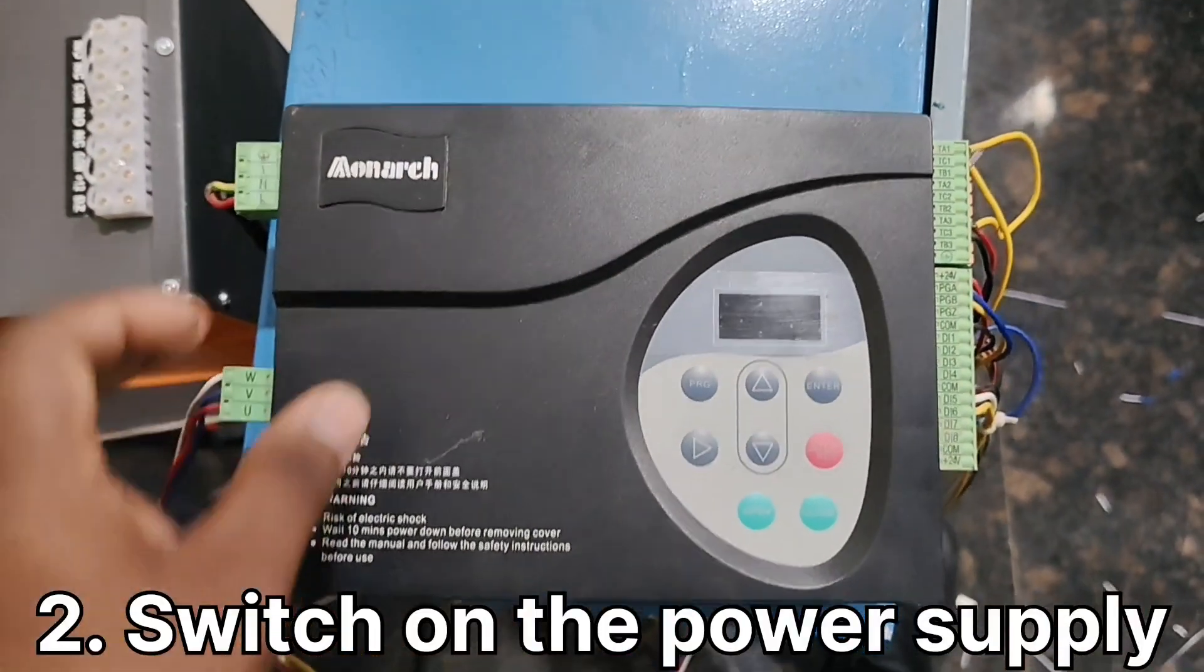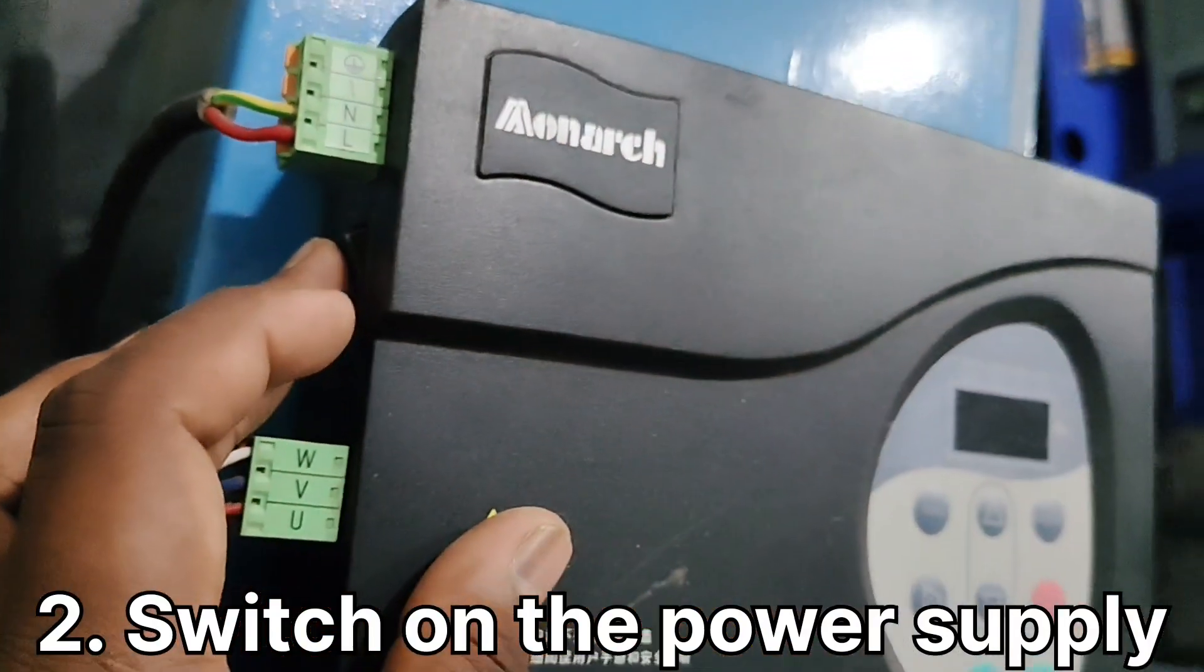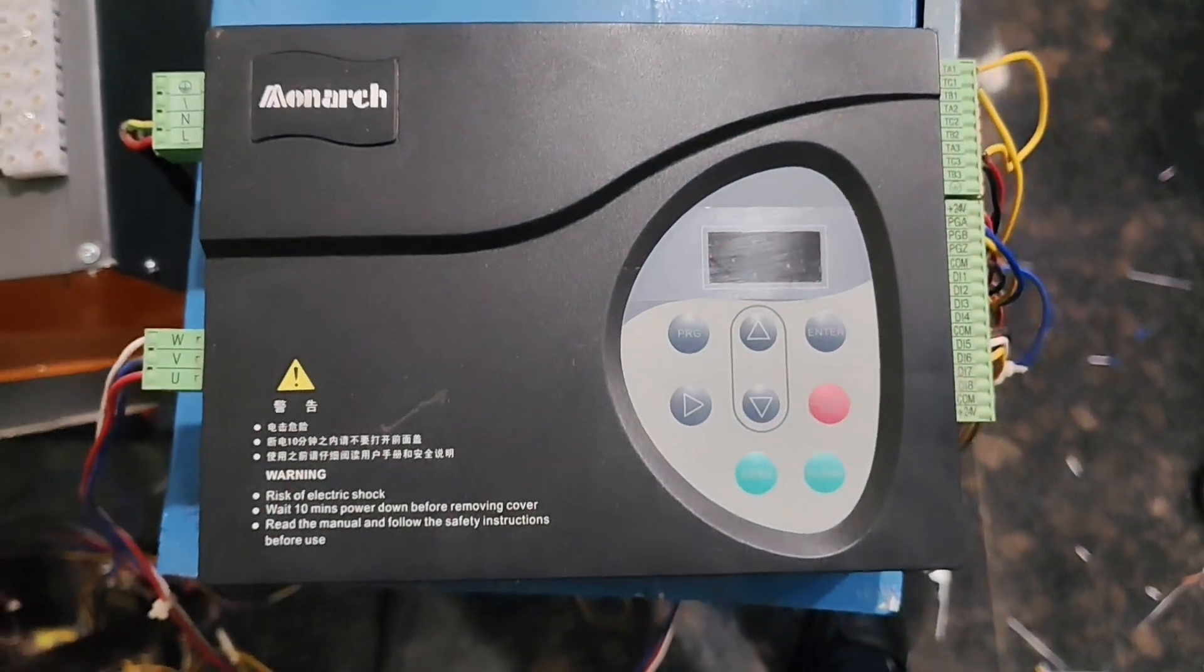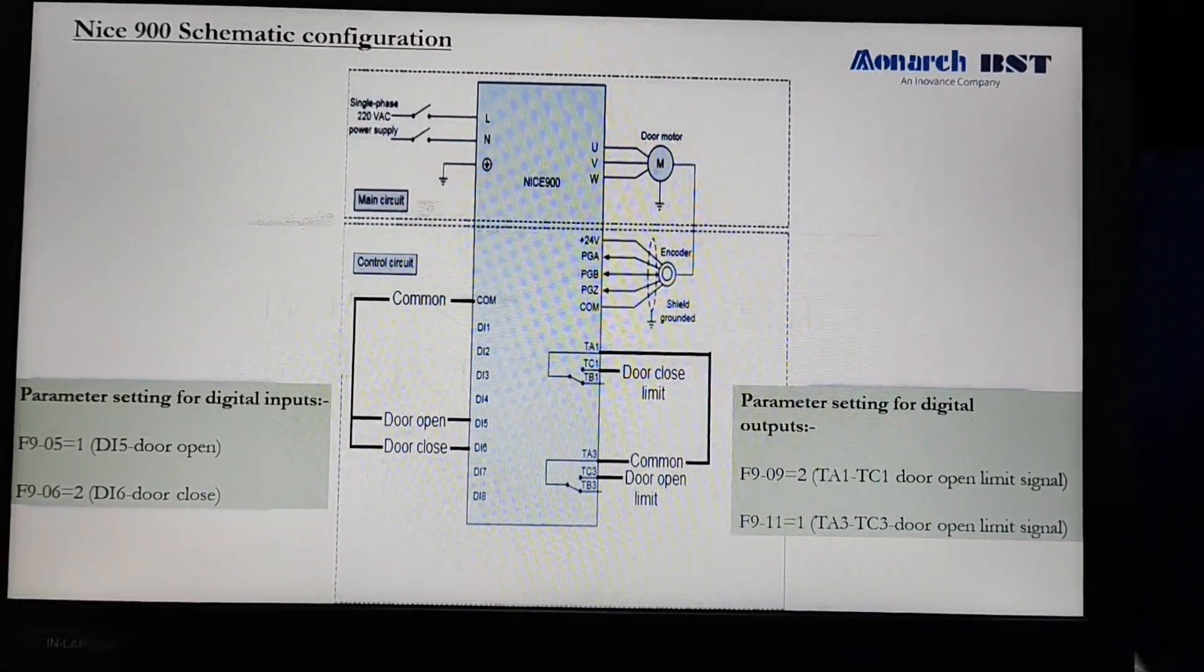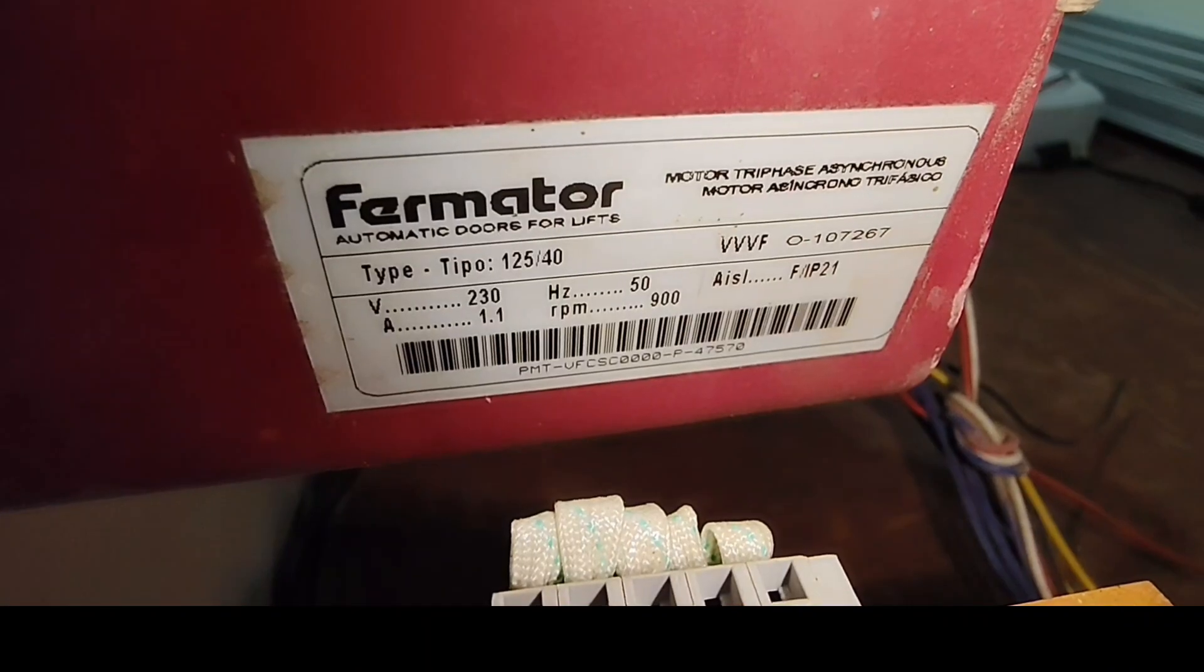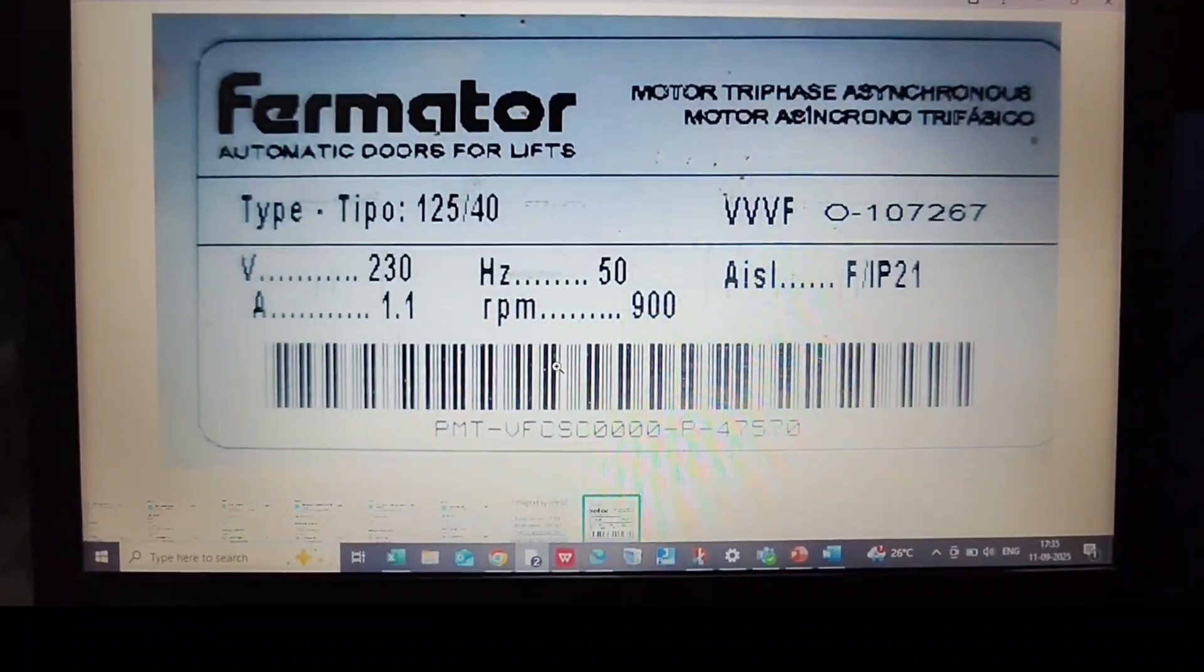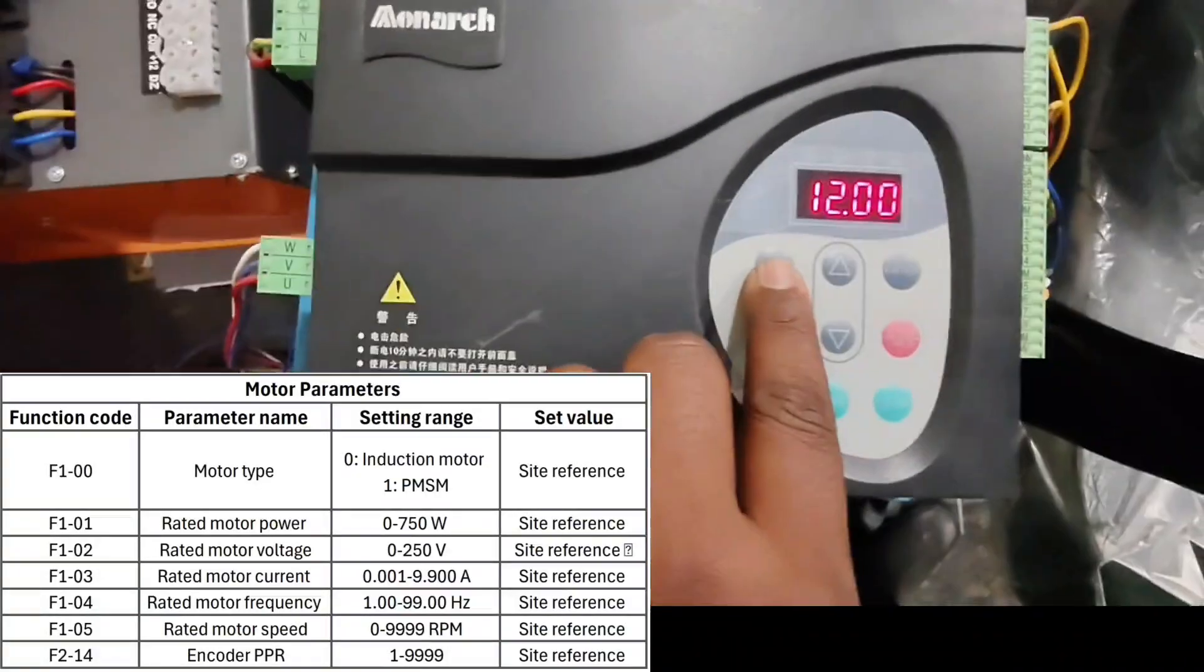After that, switch on the system. This is the format reader, so we have to enter and set motor parameters.